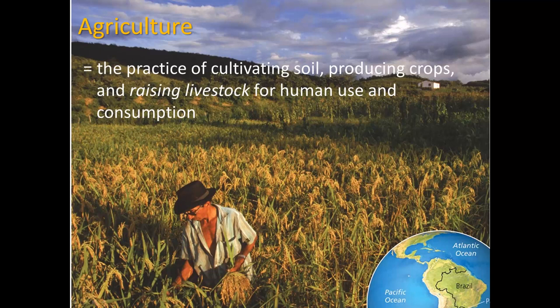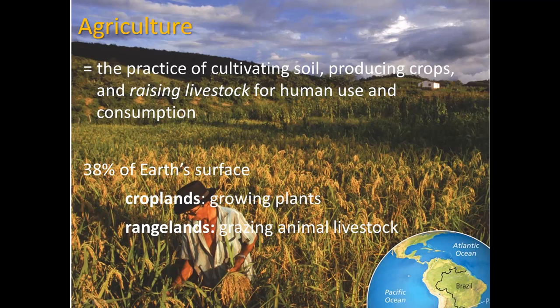Agriculture can be defined as the practice of cultivating soil, producing crops, and raising livestock for human use and consumption. Livestock is not usually what first comes to mind when we say agriculture — usually people just think of crops. Thirty-eight percent of Earth's surface is used for agriculture, in the way of croplands used for growing plants, and rangelands for grazing animal livestock.